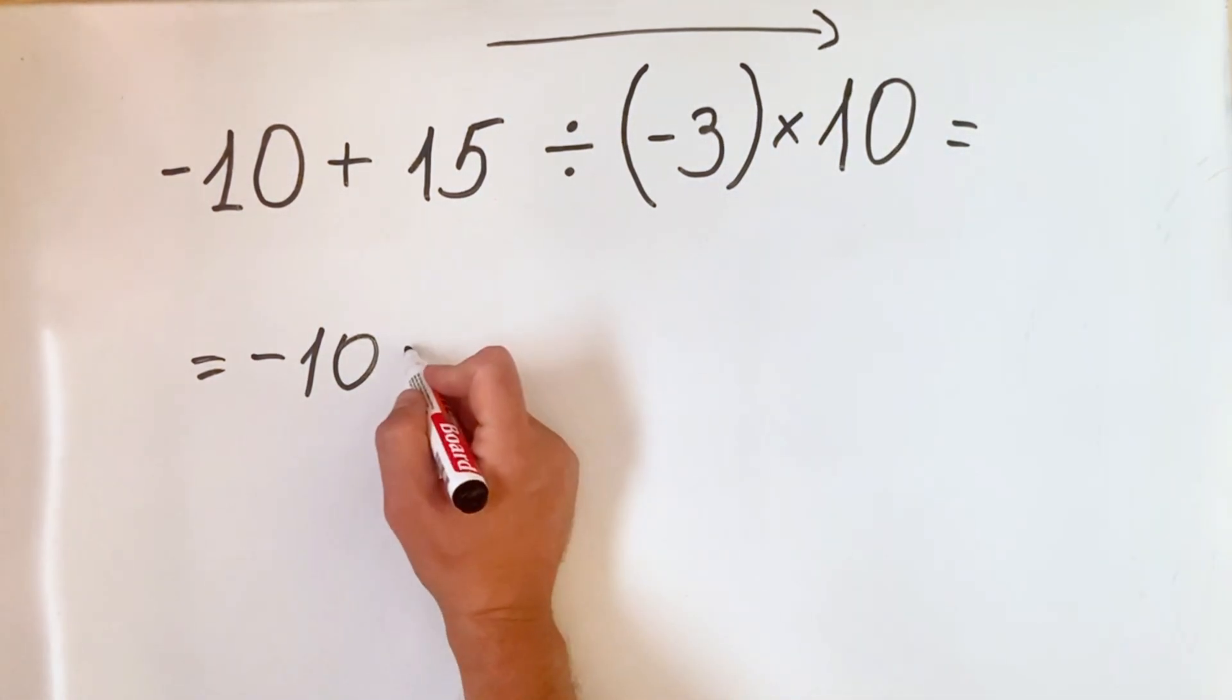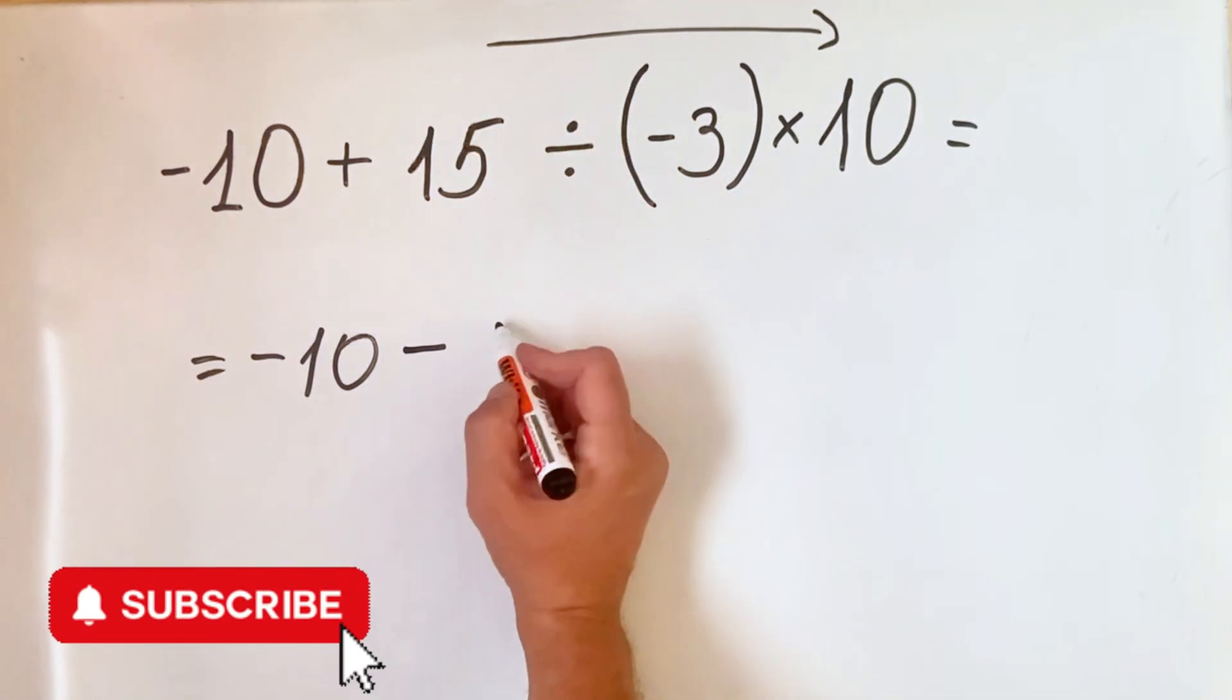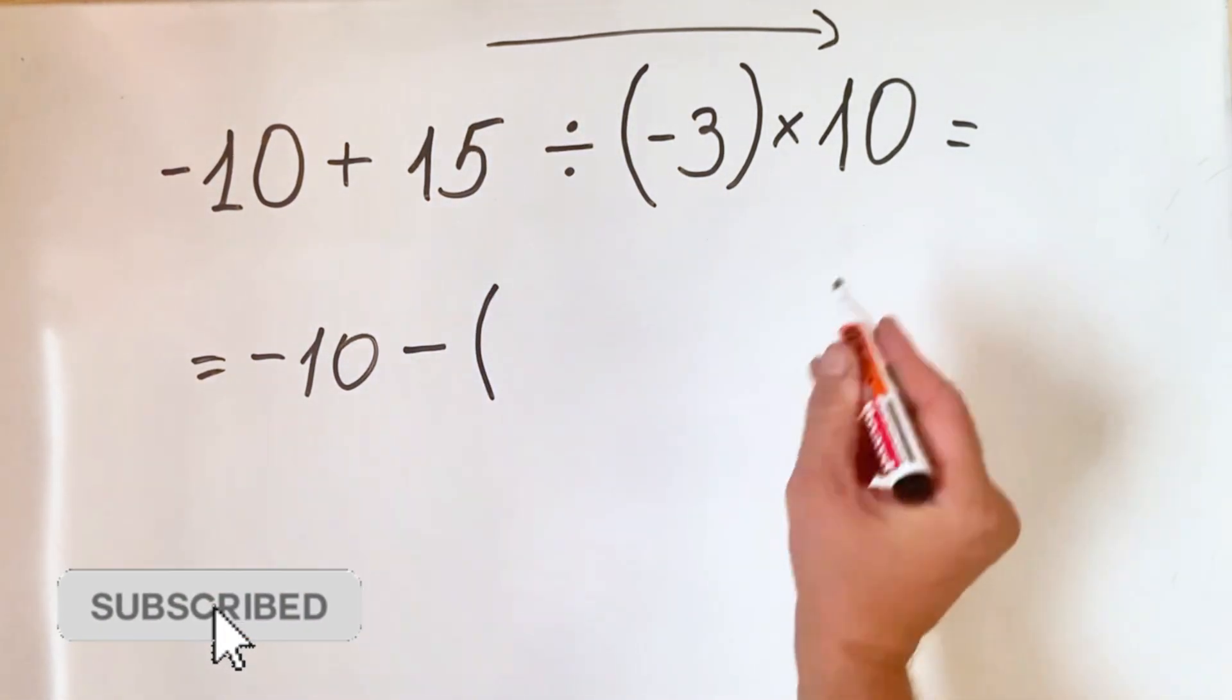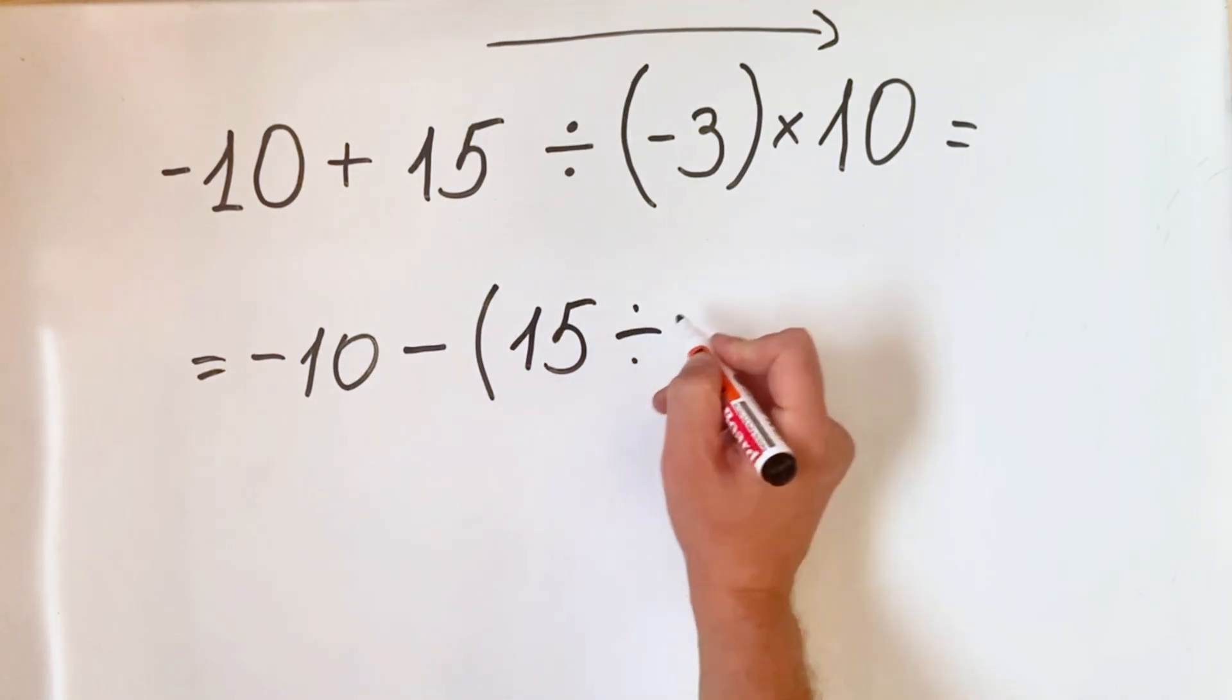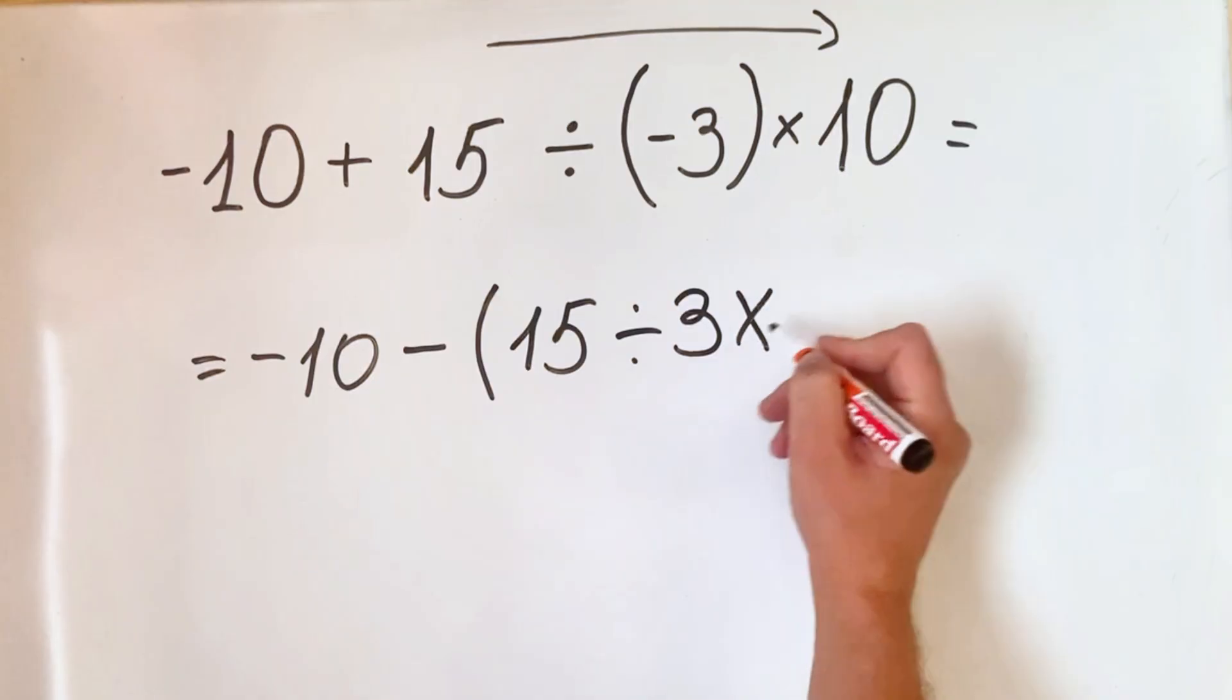So what you can do, you can put it, you can take it out here, and then you write the entire expression. So you have 15 divided by 3 multiply by 10.